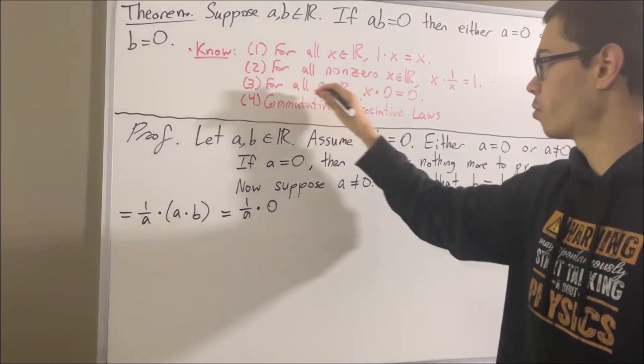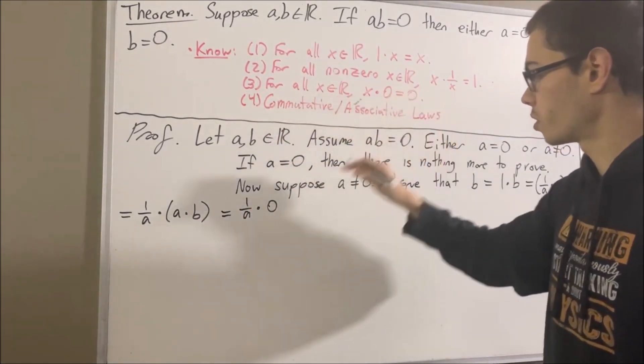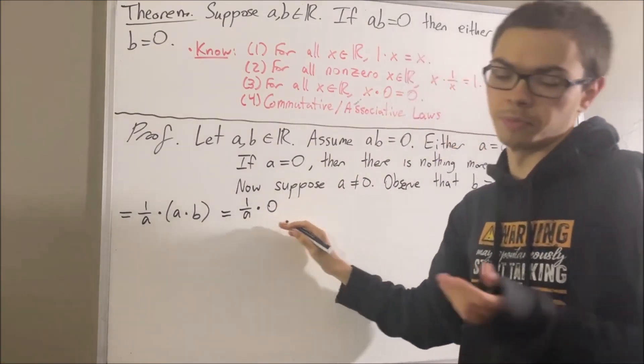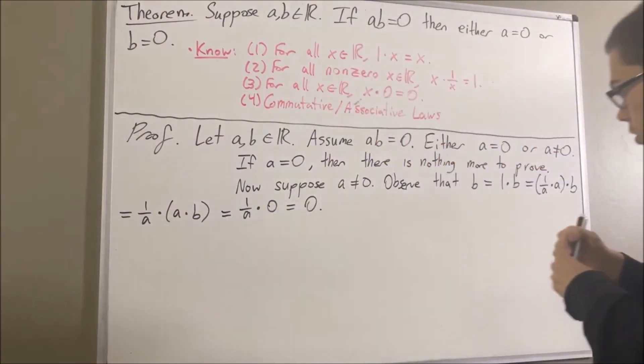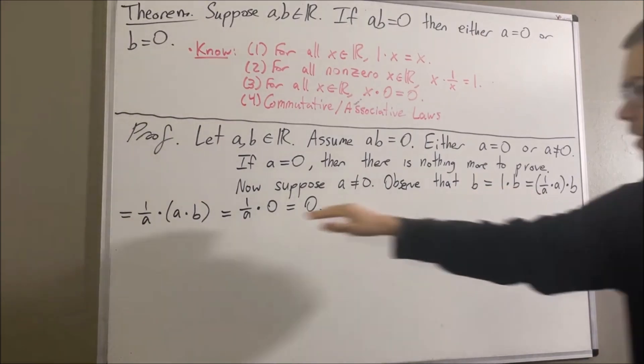And then by fact number 3, we know that any number times 0 is equal to 0. So 1 over A times 0 is equal to 0. So through this chain of equalities, we see that B is equal to 0.